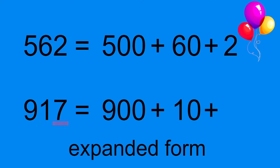And we're going to add that to the ones place. There are seven ones. So we'll write down 7. 917 equals 900 plus 10 plus 7. Well done.